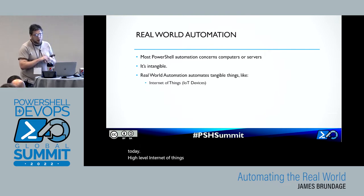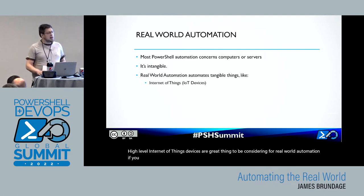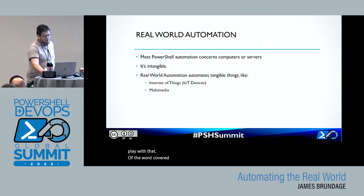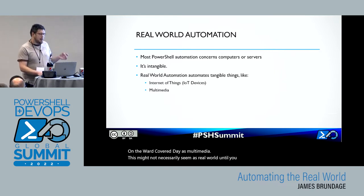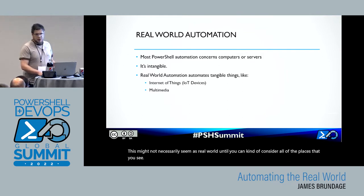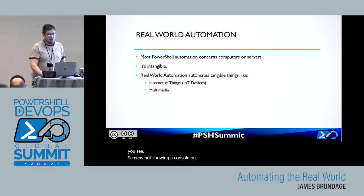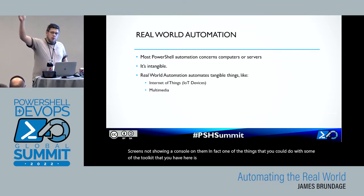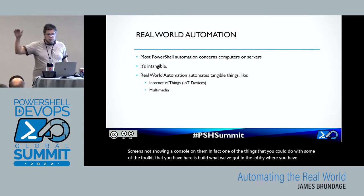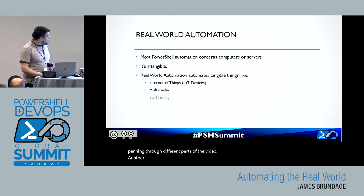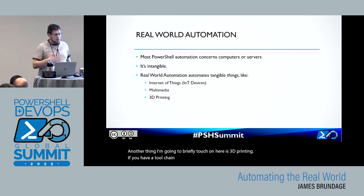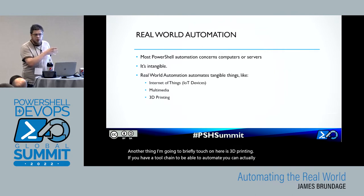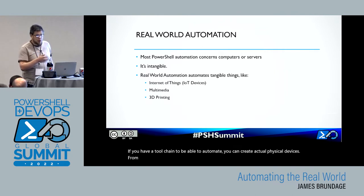Internet of Things devices are a great thing to consider for real-world automation. If you already have one, you can see if it has an API and play with it. Another thing we're going to cover today is multimedia. This might not necessarily seem as real-world until you consider all the places you see screens not showing a console. You could build what we've got in the lobby — tri-screens panning through different parts of video. I'm also going to briefly touch on 3D printing. You can actually create physical devices from a bit of PowerShell code. It's kind of crazy.